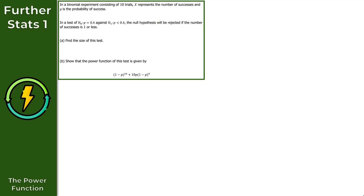Looking at question 2, which involves a binomial distribution: in a binomial experiment consisting of 10 trials, X represents the number of successes and p is the probability of success. In a test of p equals 0.4 against p less than 0.4, the null hypothesis will be rejected if X is less than or equal to 1. Part A asks us to find the size of this test.